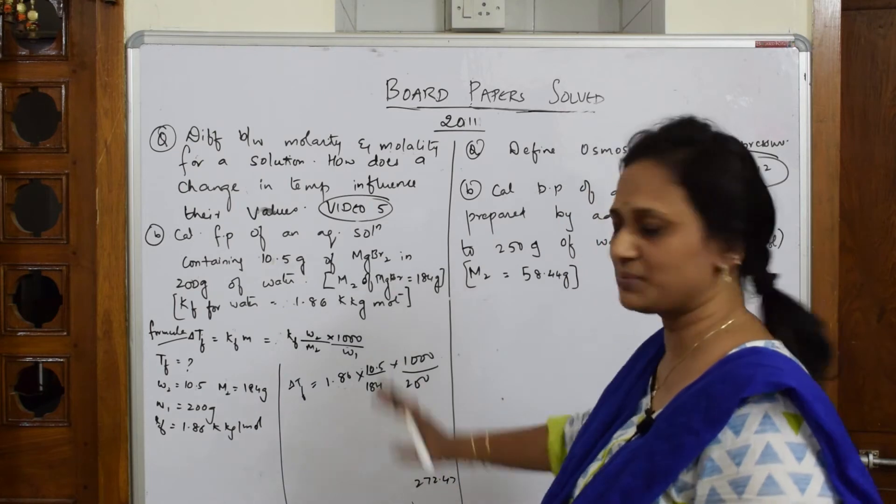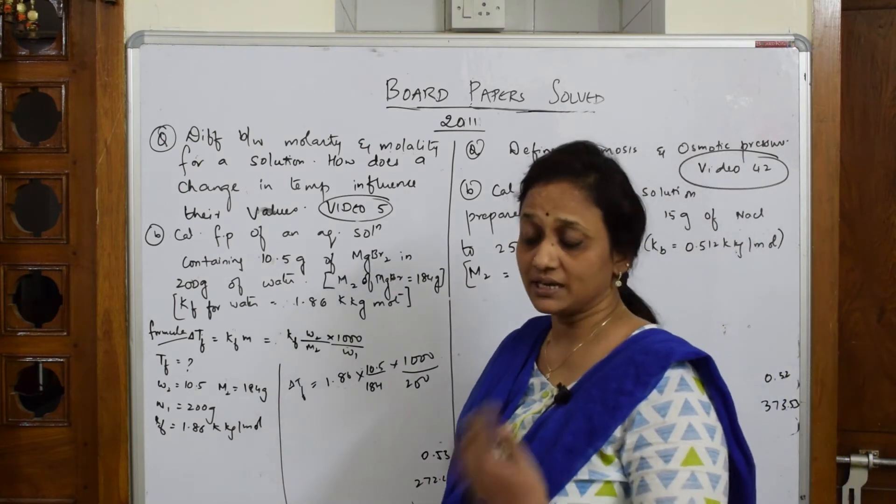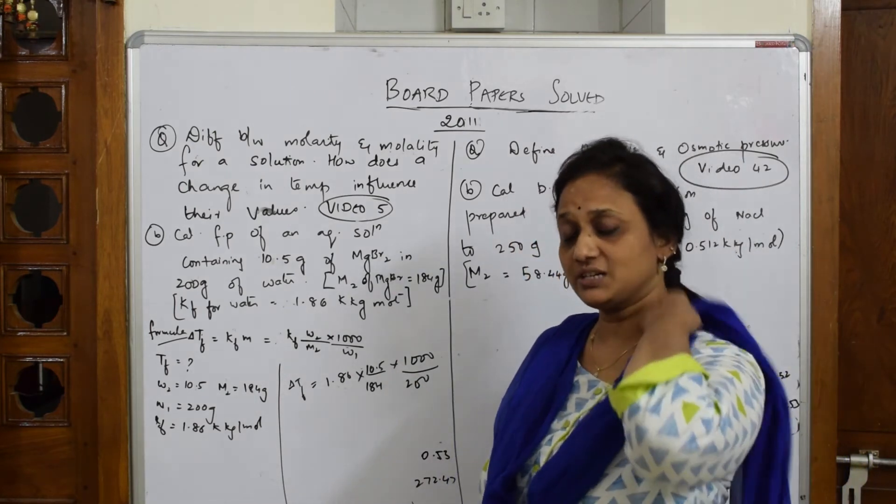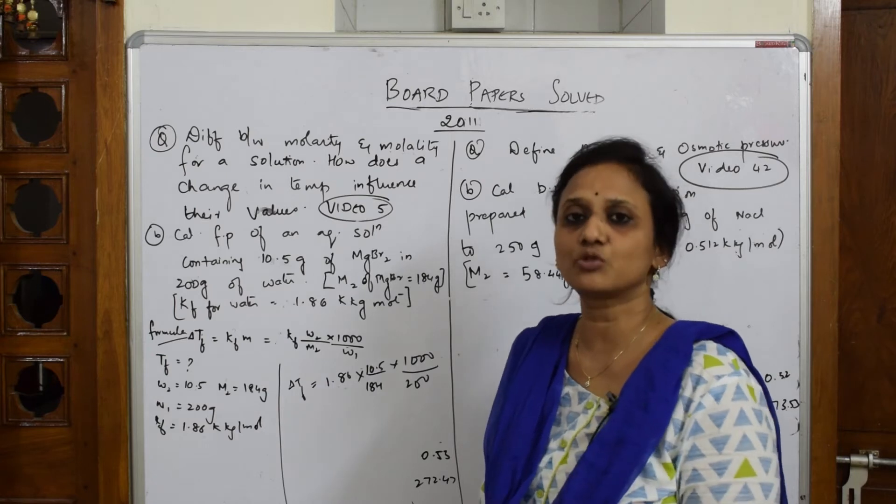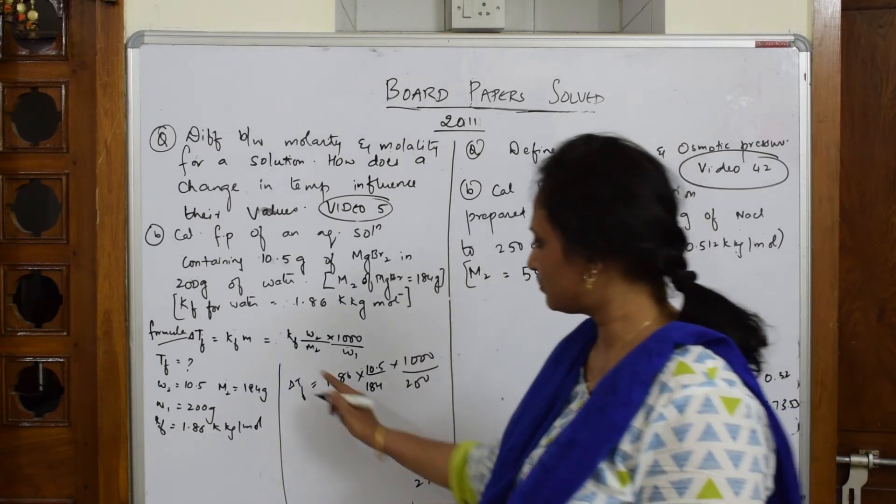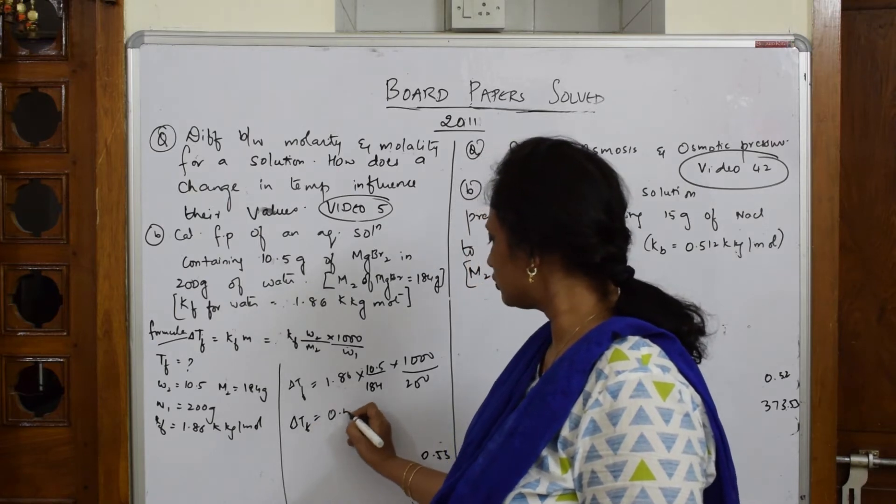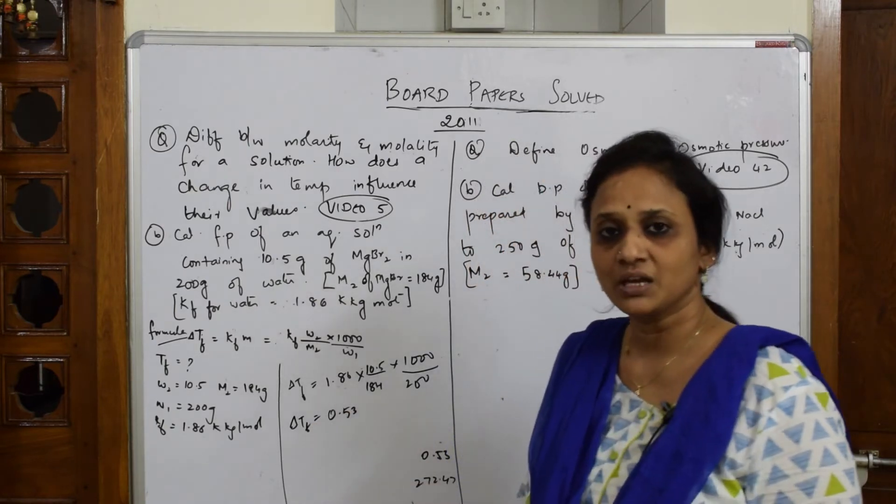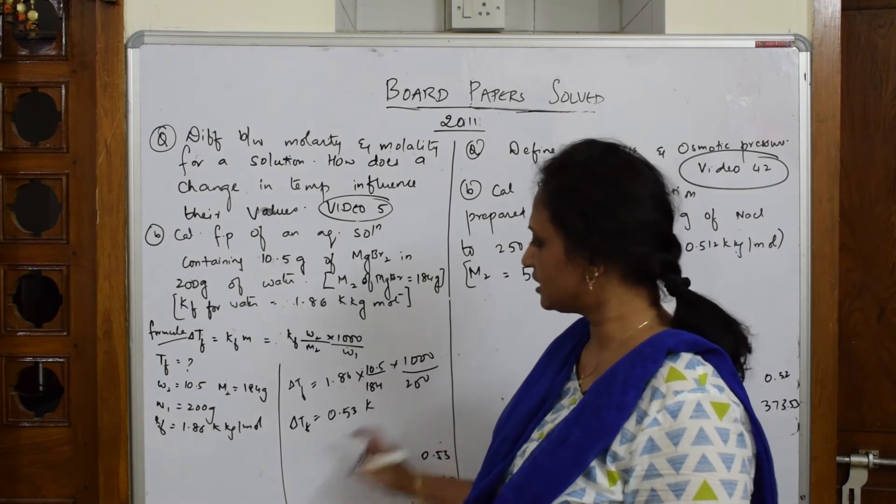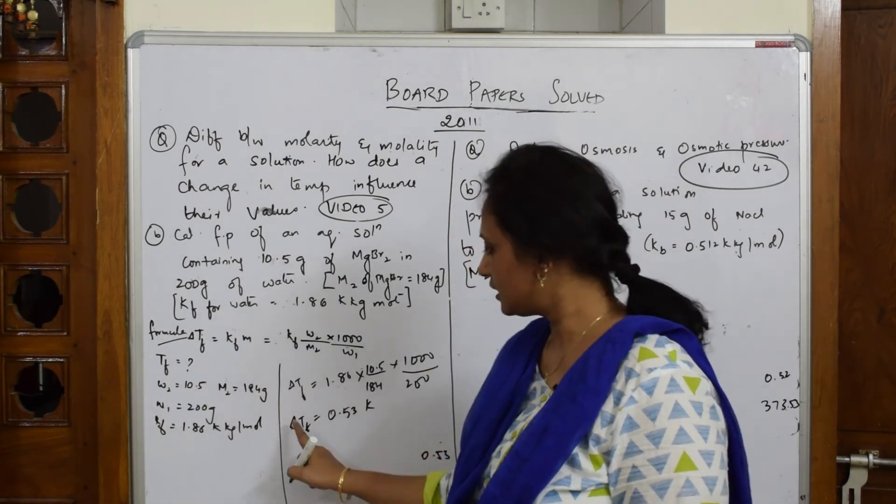M2 is 184 grams into 1000 by w1, which is 200 grams. We've been doing different numericals. They gave basic examples. When I solve this, delta TF value equals 0.53.